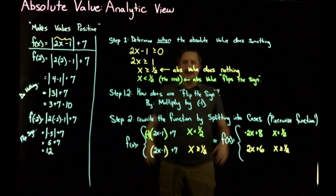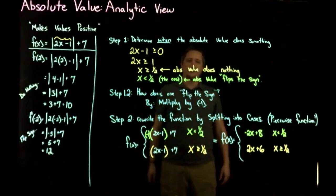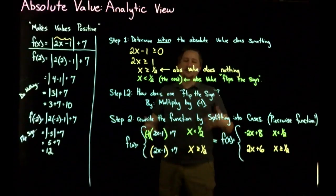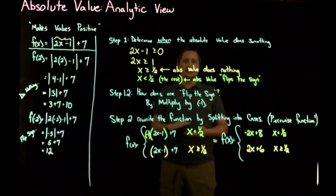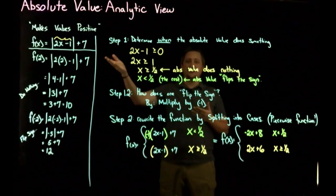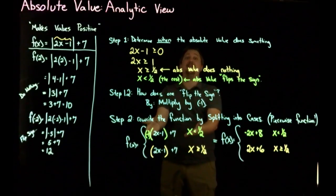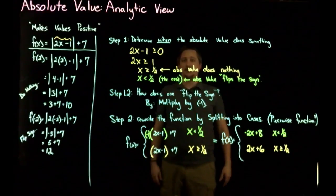So this is the analytic view for absolute value — how you go from absolute value to piecewise. We're obviously going to require this in pre-calc, but you also need it a lot in calculus because you can't take derivatives and limits nicely with absolute values. They cause all kinds of problems, so most of the time you really do have to convert to piecewise form first.